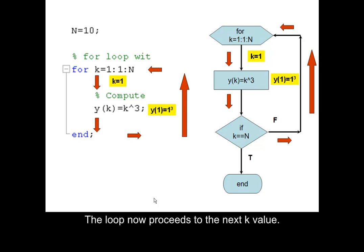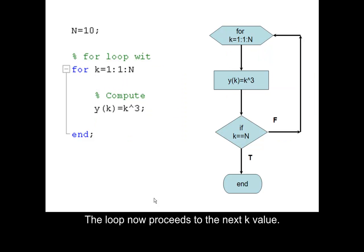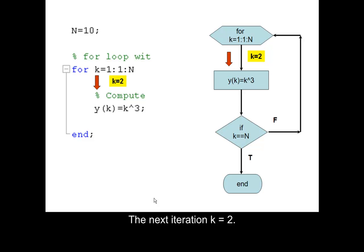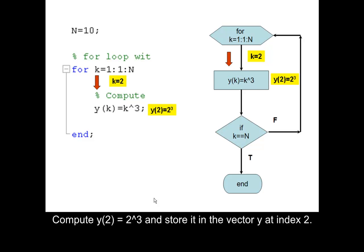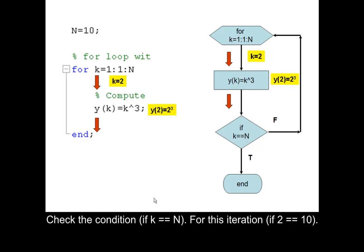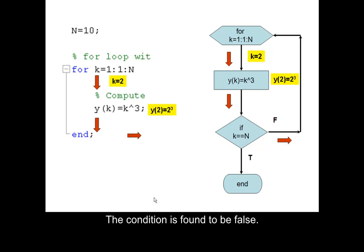The loop now proceeds to the next k value. For the next iteration, k is equal to 2. Compute y equals 2 cubed and store it in the vector y at index 2. Check the condition: if k is equal to n — for this iteration, if 2 is equal to 10. The condition is found to be false.